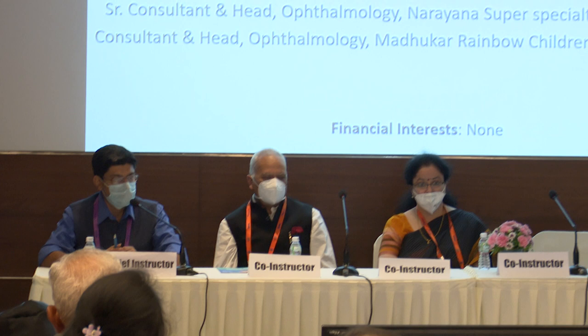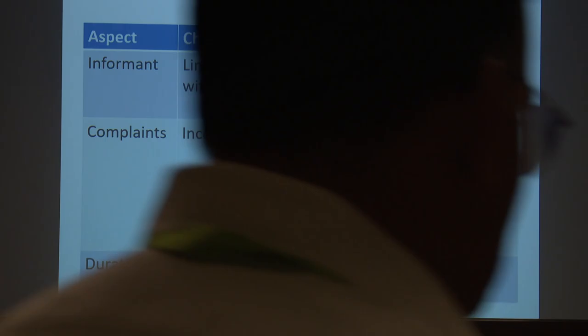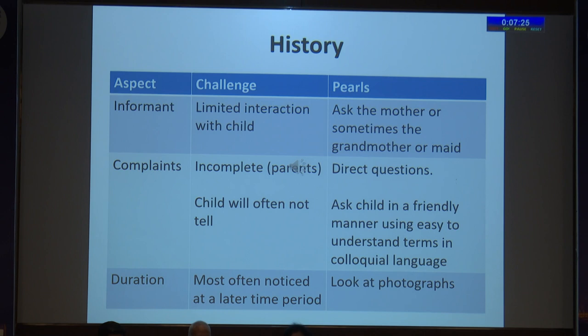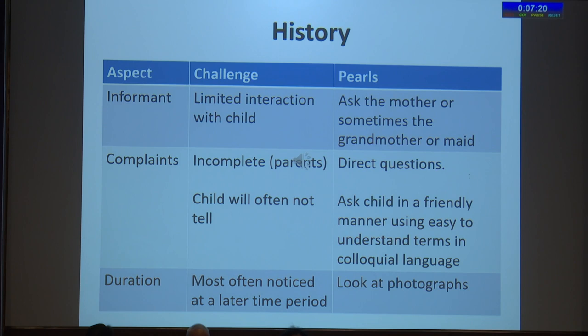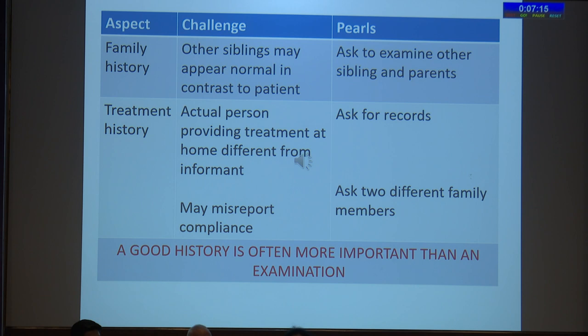Tips for an effective eye exam and refraction in children. Taking a good history is always a challenge in children because you could have limited interaction with the child, or family history may sometimes be difficult to elicit as other siblings may appear normal in contrast to the index case.